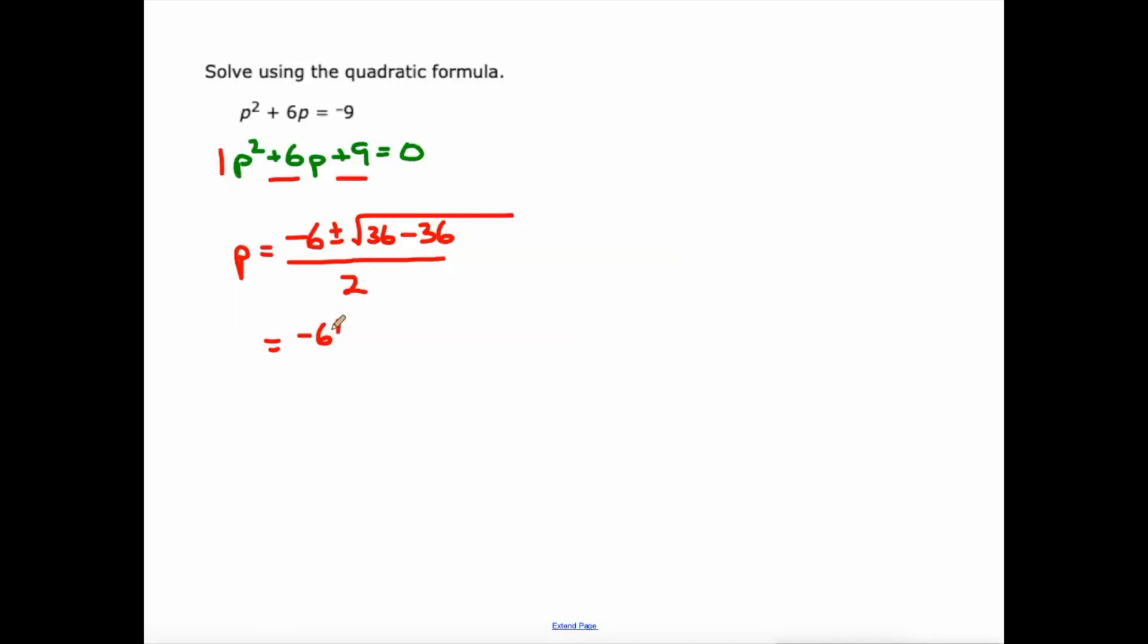We get negative 6 plus or minus the square root of 0 over 2. The square root of 0 is 0. So negative 6 plus or minus 0 over 2. Whether you add or subtract 0 to negative 6, you get negative 6. And negative 6 divided by 2 is negative 3. So this just has the one answer, just has one solution, not 2. So when the square root, when that b² - 4ac equals 0, we just get one answer. Remember that.